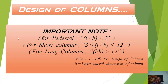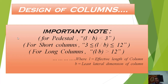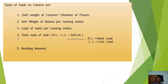Here, L is the effective length of the column and B is the least lateral dimension of the column. If the column is square, the least dimension is taken as B. If the column is circular, the diameter is taken directly as B.